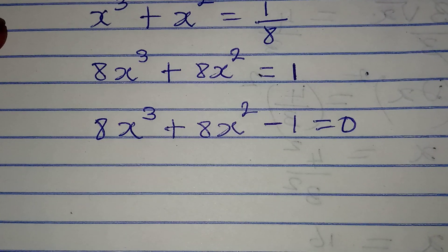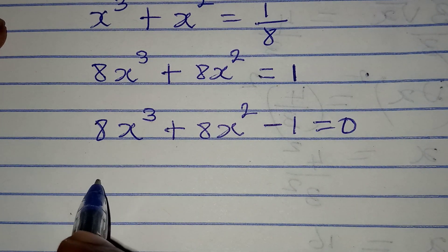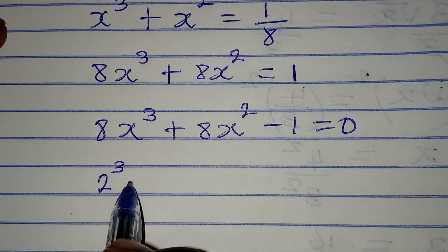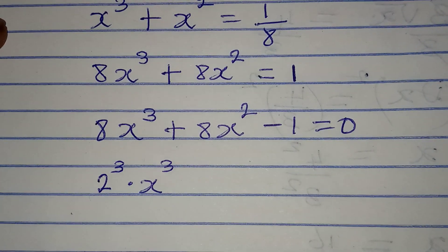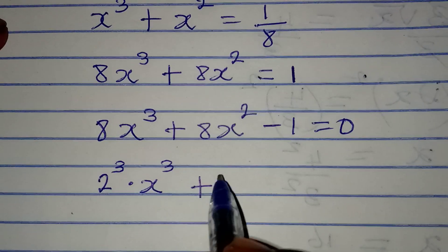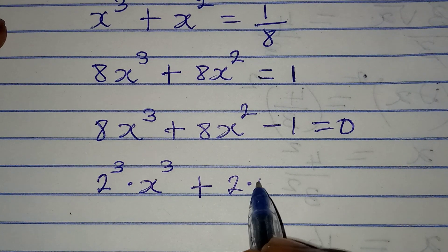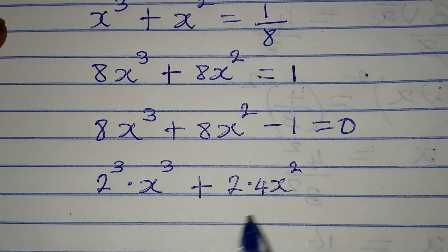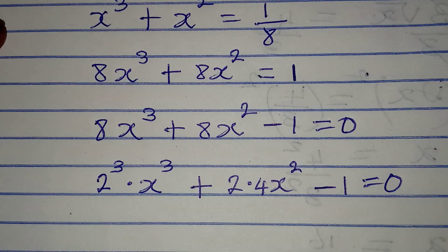This 8 here can be written as 2 to the power of 3, multiplied by x to the power of 3. Then 8 here is the same as 2 times 4x squared. Then I have minus 1 equals 0.